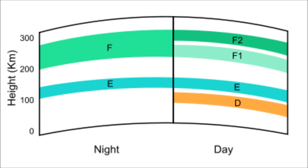The highest frequency that will be refracted by the F-region is the maximum usable frequency. It is often a good idea to use a wavelength close to the maximum usable frequency, but lower frequencies may be more prone to absorption and degradation. Sometimes the maximum usable frequency drops below 5 MHz or so due to disturbance or a weakened F-region. Solar flares can cause such disturbances. Low points on the sunspot cycle don't help either.